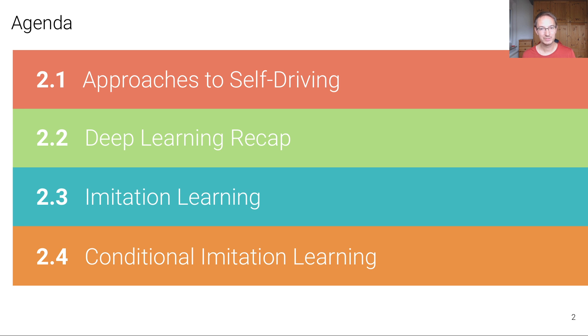In the third unit, we'll then be introducing imitation learning. And then finally, in the fourth unit, a special form that is very important or even necessary for self-driving, which is called conditional imitation learning.